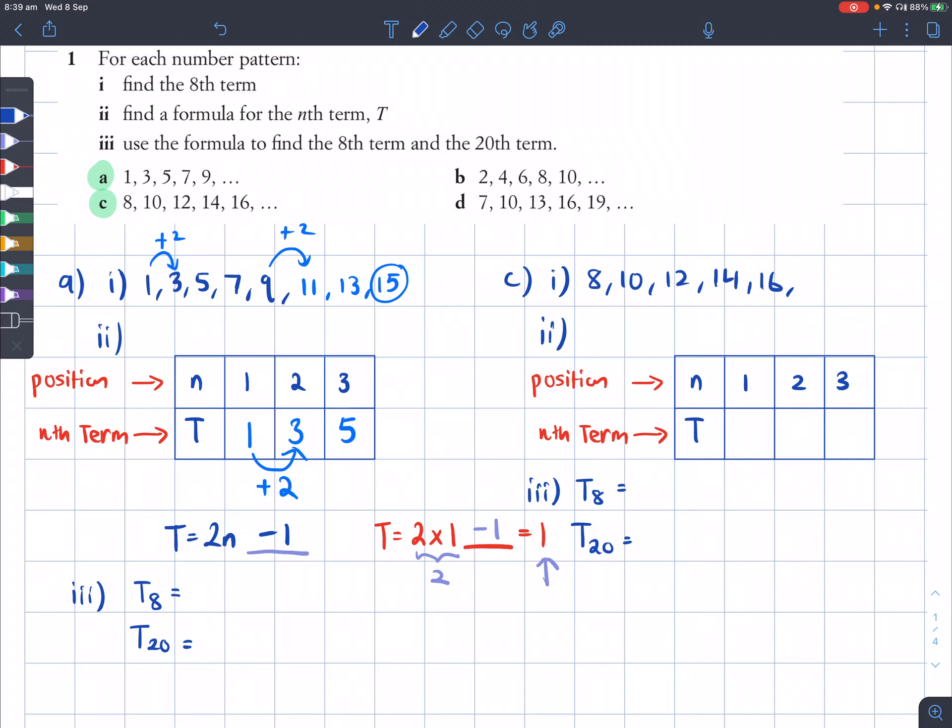How do I find out T₈ for part 3? Well, I've already got my formula here, and this will produce any kind of value given that I tell you the position of term. So I need to substitute in n here as my 8th term. That would mean I'll have 2 times 8 minus 1. 2 times 8 is 16, minus 1 is 15. Whereas if I do 2 times 20 now for the 20th term, I'll get 2 times 20 minus 1, and 2 times 20 is 40, 40 minus 1 is 39.